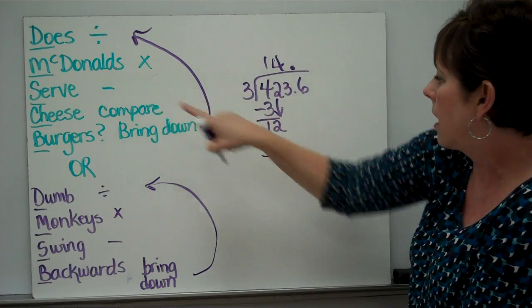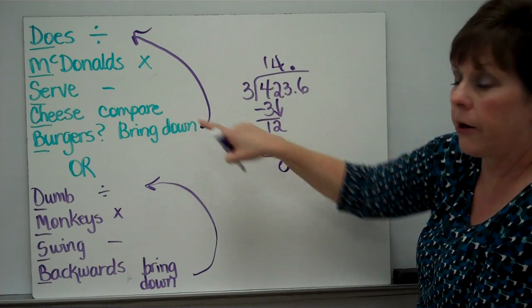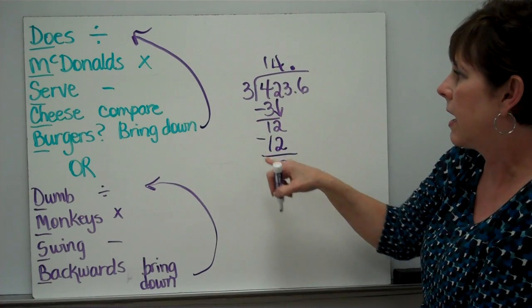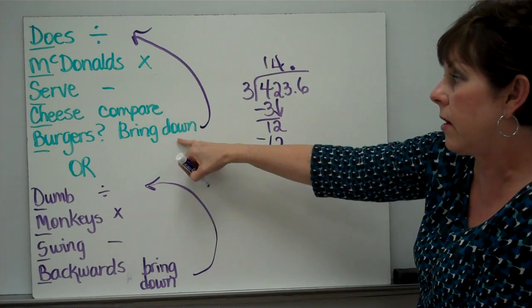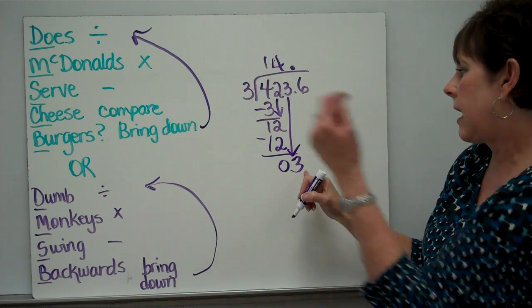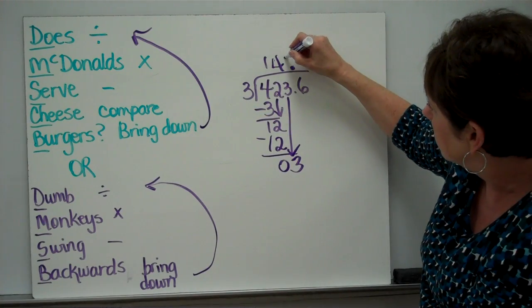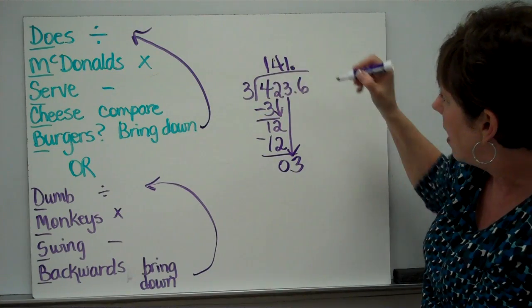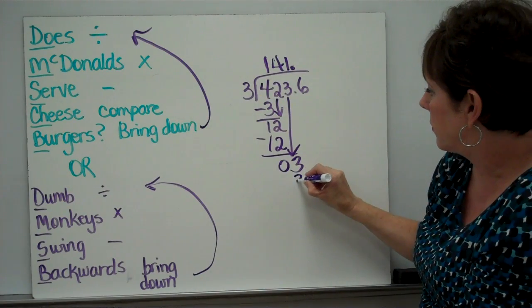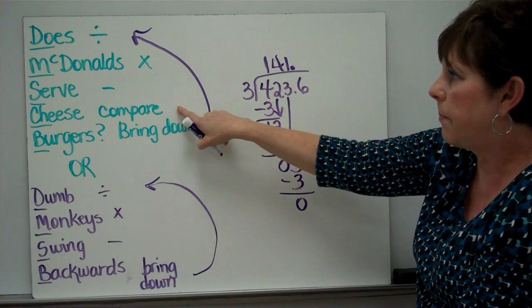Subtract. 12 minus 12 is 0. Compare. Can 0 be divided by 3? No, it's too small. Is there another number to bring down? Yes. Bring this down. Start over. How many times can 3 be divided by 3? 1. Multiply. 1 times 3 is 3. Subtract. 0.